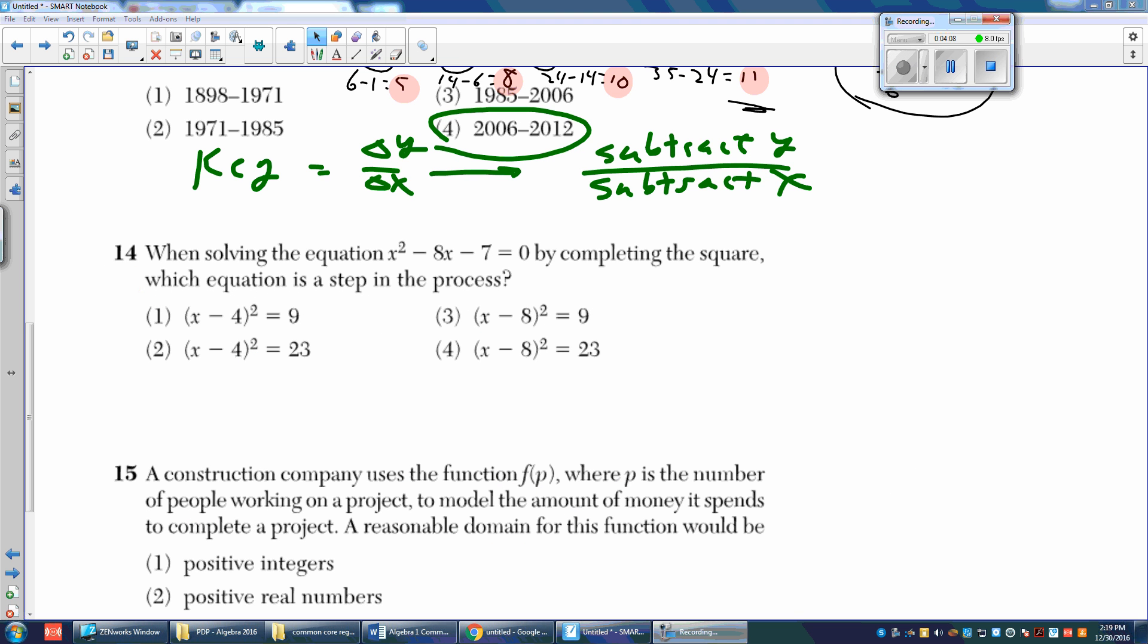Now let's take a look at question number 14. Number 14 is asking us to complete the square. So remember, when we're completing the square, A equals 1. Good. We can't complete the square unless A equals 1. B is negative 8, and then C is negative 7.